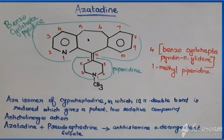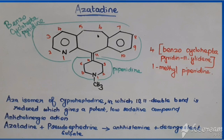So those are the two differences. Azatadine is an aza-isomer of cyproheptadine, and here the 10–11 double bond is reduced, giving a more potent and low-sedative compound. It has anti-cholinergic action and is combined with pseudoephedrine sulfate, giving antihistaminic and decongestant action. It is available as a maleate salt.